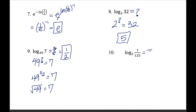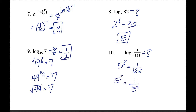Number ten: same idea. I have five to the something equals one over 125. One over 125 is smaller than five, so I need a negative exponent. I know that 125 equals five cubed, so to bring it to the numerator I negate the exponent — five to the negative three is the same as one over five cubed. So log base five of one over 125 is equal to negative three.